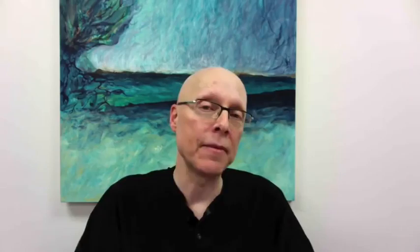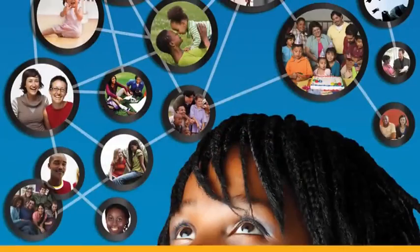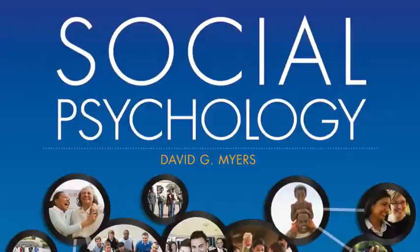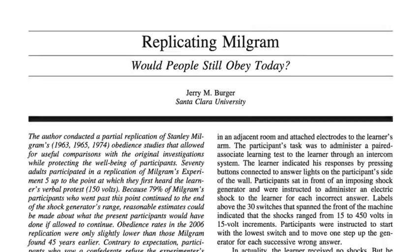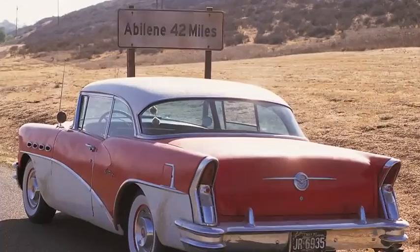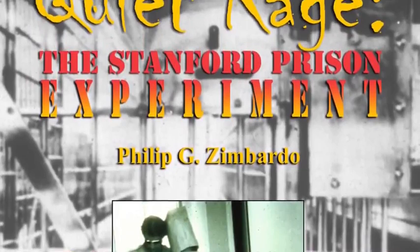For example, they include chapters from some of the best social psychology textbooks ever written, including David Meyer's renowned textbook, Social Psychology, published by McGraw-Hill. They also include journal articles from the American Psychological Association and the Association for Psychological Science. You'll be able to watch some outstanding videos, such as the Abilene Paradox and Quiet Rage.